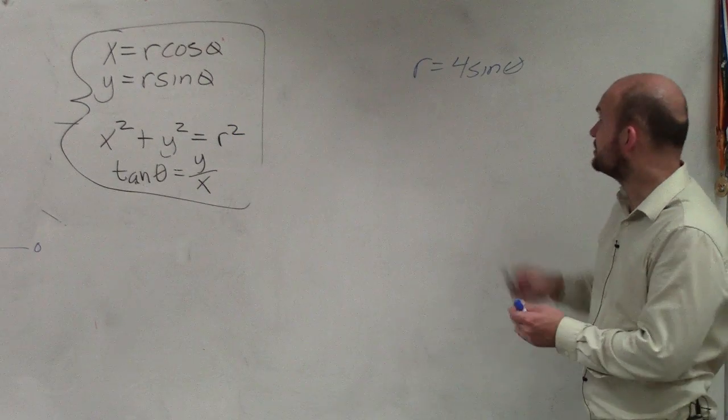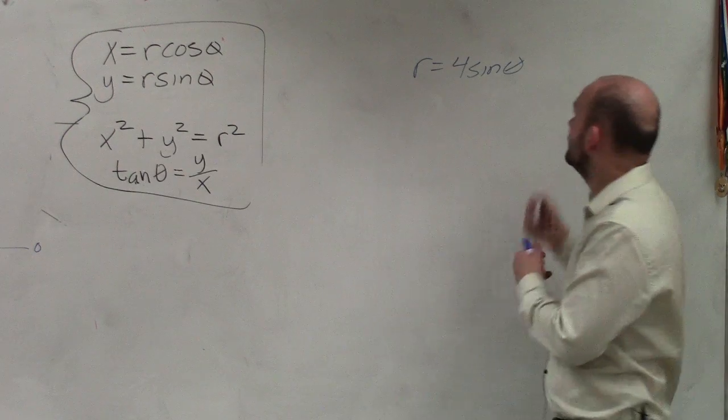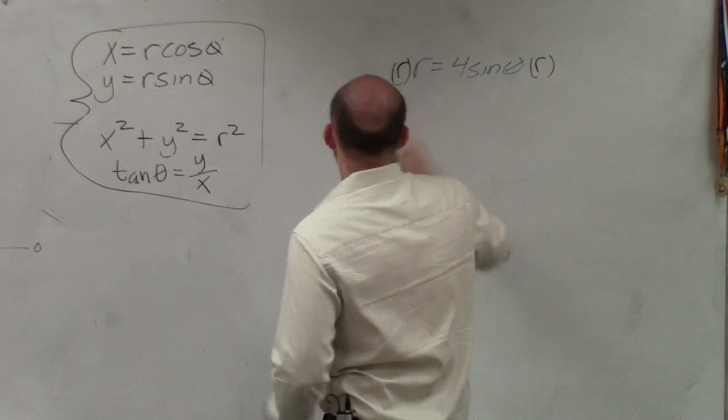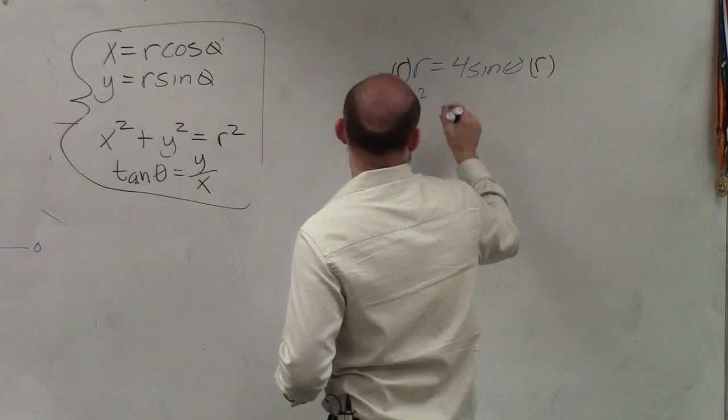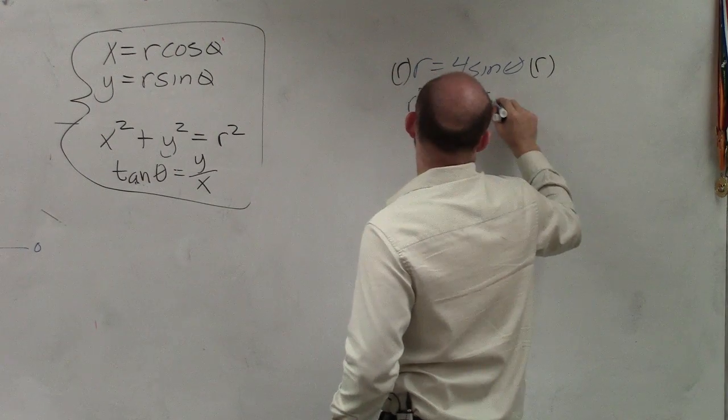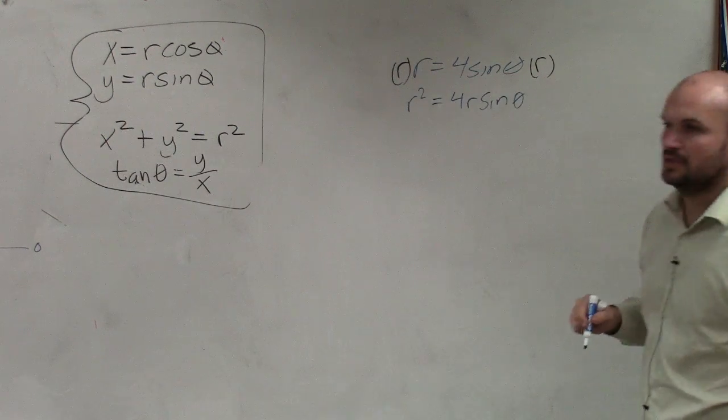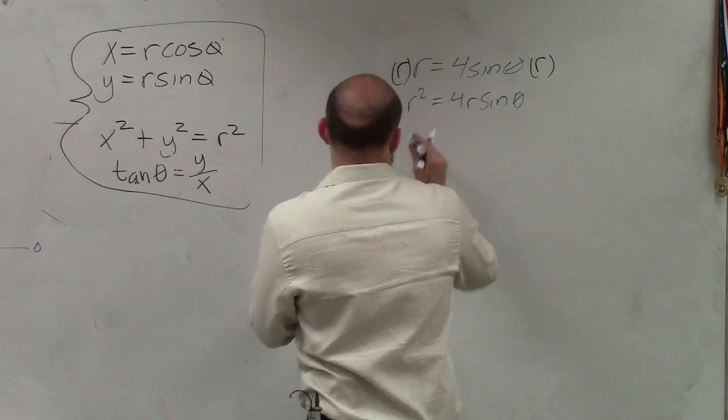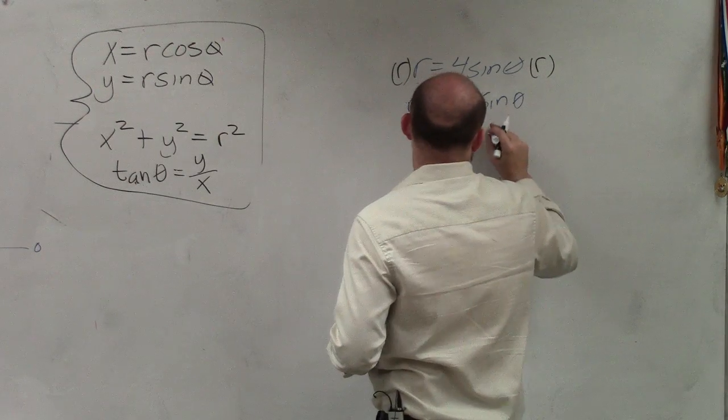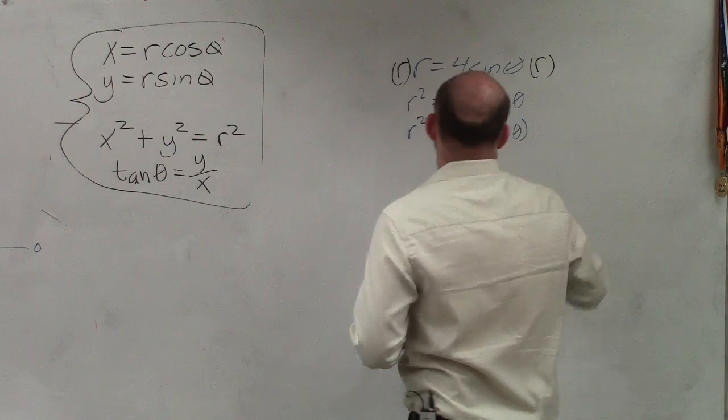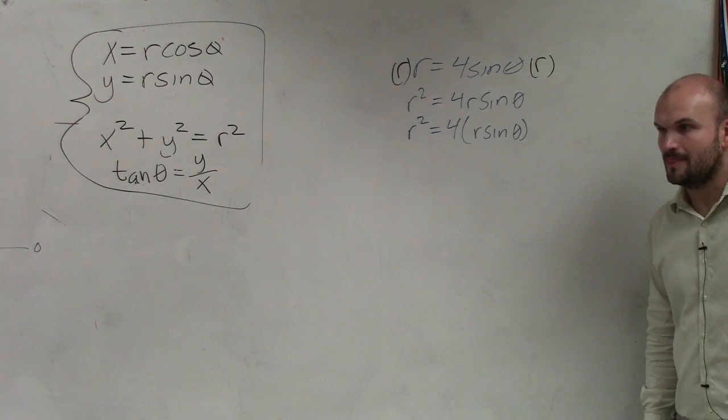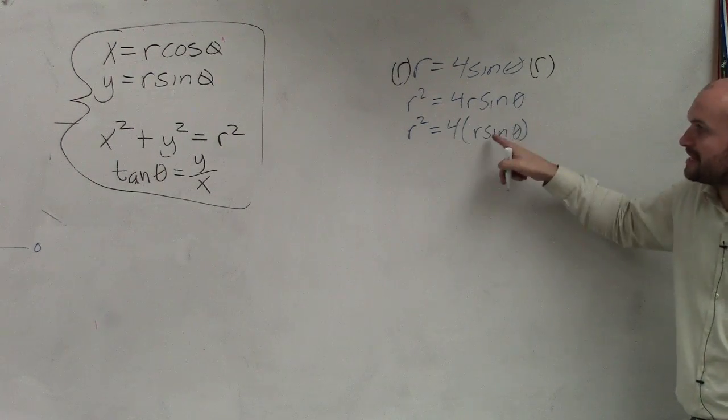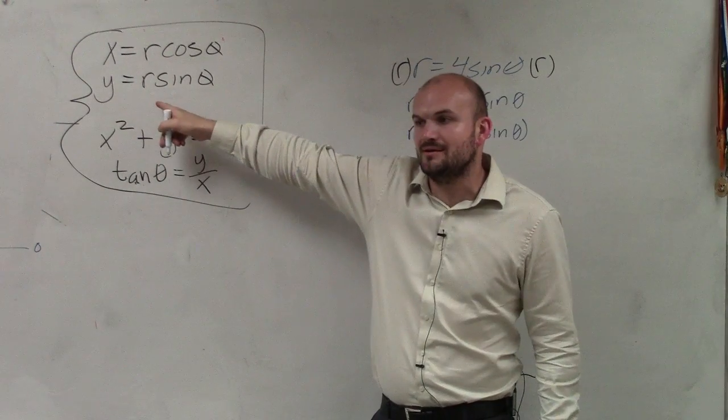So what I'm going to do to get this to be r times sine of theta is multiply by r on both sides. So now I have r squared equals 4r times the sine of theta. Does everybody see what I did and why I did that? Technically, what I now have is r squared equals 4 times r sine of theta. Now, why did I want to do that? I wanted to multiply by r so I got r sine of theta because what does r sine of theta represent? y.